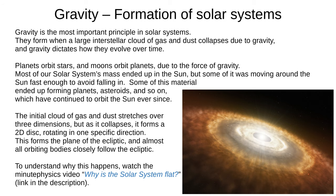Gravity is the most important principle in solar systems. They form when a large interstellar cloud of gas and dust collapses due to gravity, and gravity dictates how they evolve over time. Planets orbit stars and moons orbit planets due to gravity.